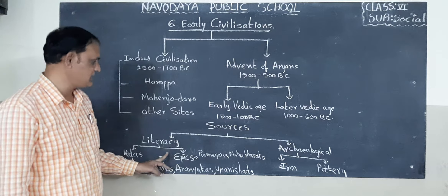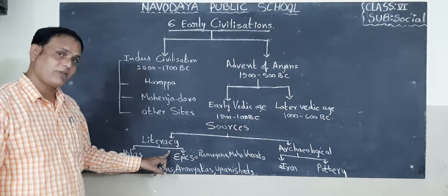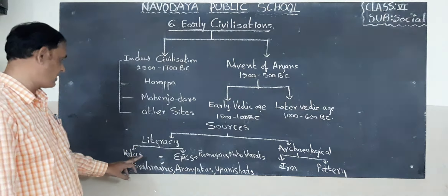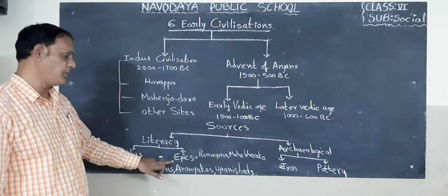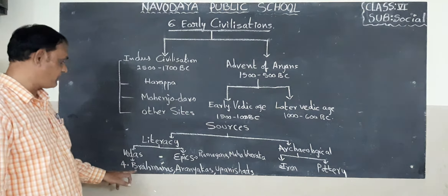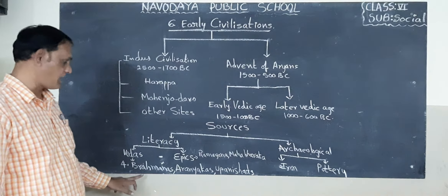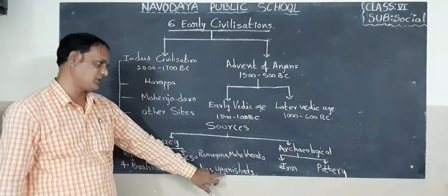So that is about the evidence. The first one is literary evidence, which is of two types: Vedas and epics. Apart from Vedas, we also have Brahmanas, Aranyakas, and Upanishads. Next is archaeological evidence.